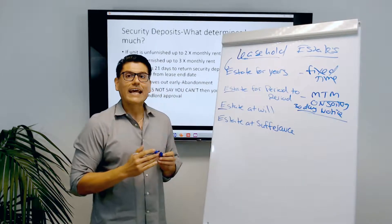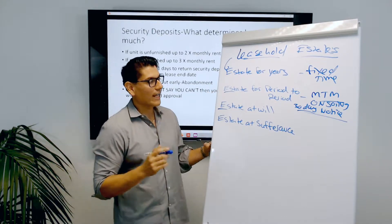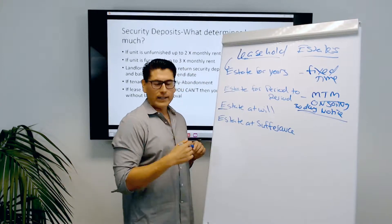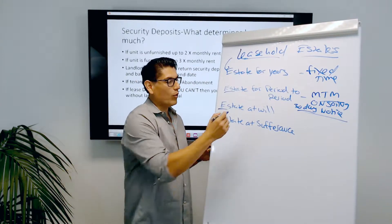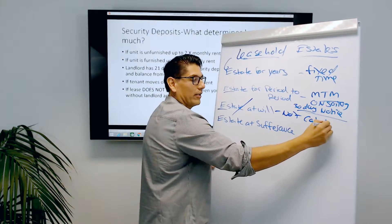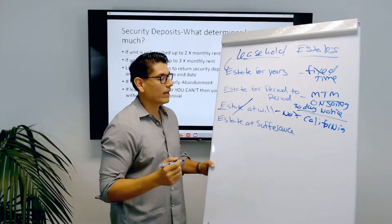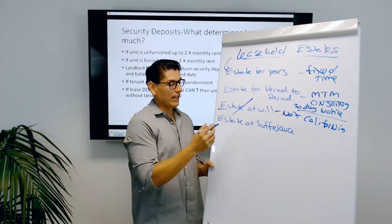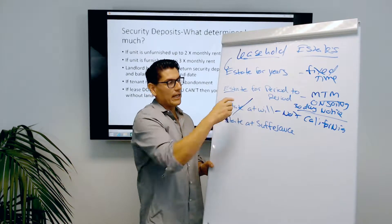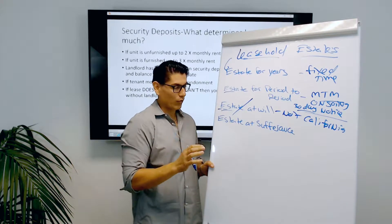Another one to know is called an estate at will — kind of like an estate for period to period, except no 30-day notice is required. They get terminated at any moment, which is why this is not allowed in California because we have landlord-tenant laws. One of those laws says you can't just knock on the door and throw the tenant out — there must be a 30-day notice. So estate at will: no notice required, but it's not allowed in California.